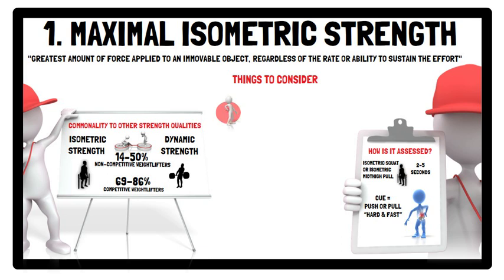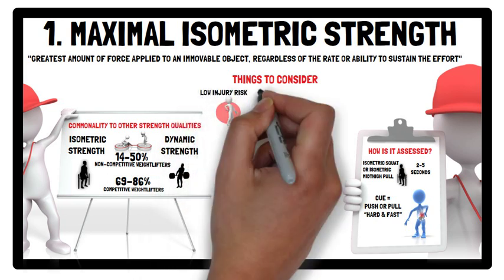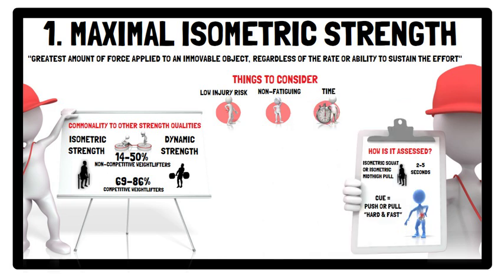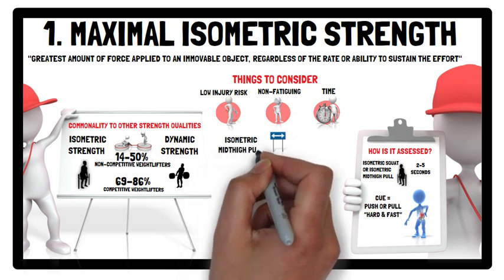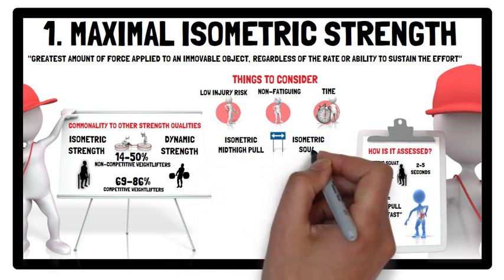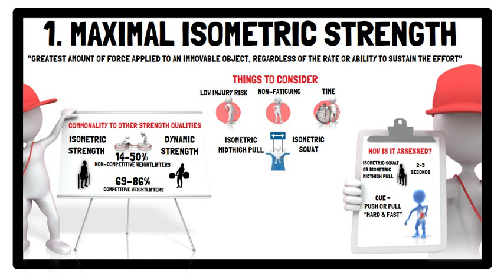Maximal isometric strength tests have low injury risk, are non-fatiguing, and don't take a lot of time for individuals or small groups. However, because specialised equipment and instrumentation are required, it can be challenging to test large squads in a certain time frame. Deciding upon which test to use — isometric mid-thigh pull or isometric squat — can be based on athlete preference, training experience, size and transportability of the platform, and the familiarisation time needed.